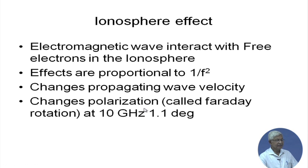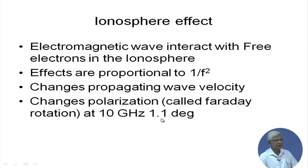The ionosphere also changes the polarization — the electric field vector gets rotated, which is called Faraday rotation. At 10 GHz it is about 1.1 degrees, which is very small. Because of this depolarization, whatever remains in the intended polarization is reduced by a very small amount, and a small cross-polarization component is also created. This is a typical number; it varies from place to place and time to time.